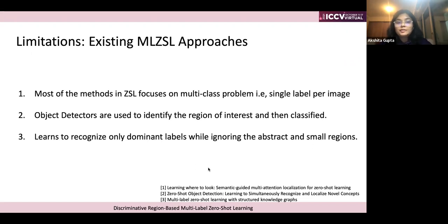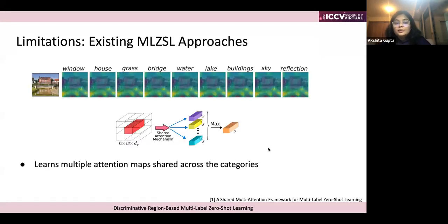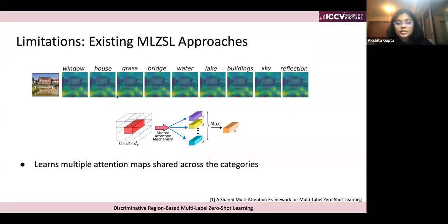These were some of the limitations we came across when exploring multi-level zero-shot scenarios. Now I'll explain one of the papers we used as our baseline — a CVPR 2020 oral paper proposing a method called LISA. What they do is learn multiple attention maps, but those attention maps are shared across categories. As you can see from the image, the attention maps are overlapping on all possible objects and are not able to create that specific region discrimination.